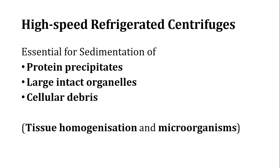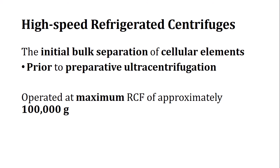Other than low speed centrifuge and microfuge, there is one called the high speed refrigerator centrifuge. It is essential for the sedimentation of protein precipitates, large intact cell organelles, and cellular debris obtained from tissue homogenization and microorganisms. It is used for the initial bulk separation of cellular elements prior to preparative ultracentrifugation.